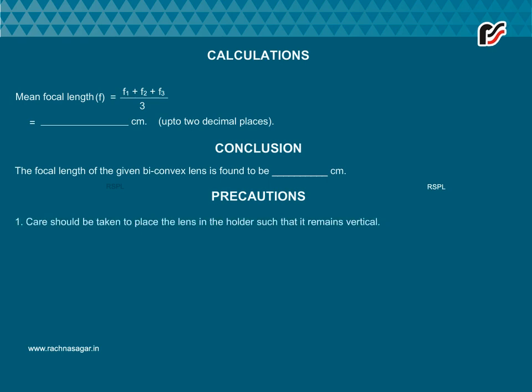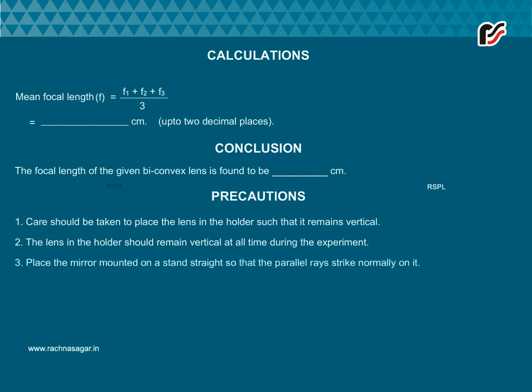Precautions. Care should be taken to place the lens in the holder such that it remains vertical. The lens in the holder should remain vertical at all times during the experiment. Place the mirror mounted on a stand straight so that the parallel rays strike normally on it. Take readings corresponding to the positions of the lens on the scale aligning to the center of the lens.